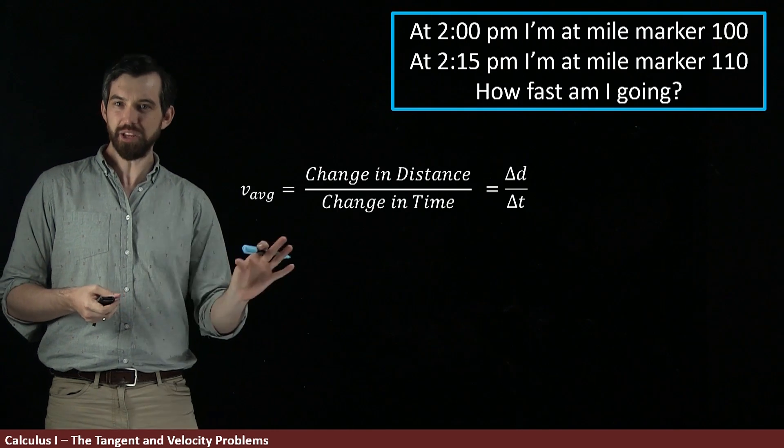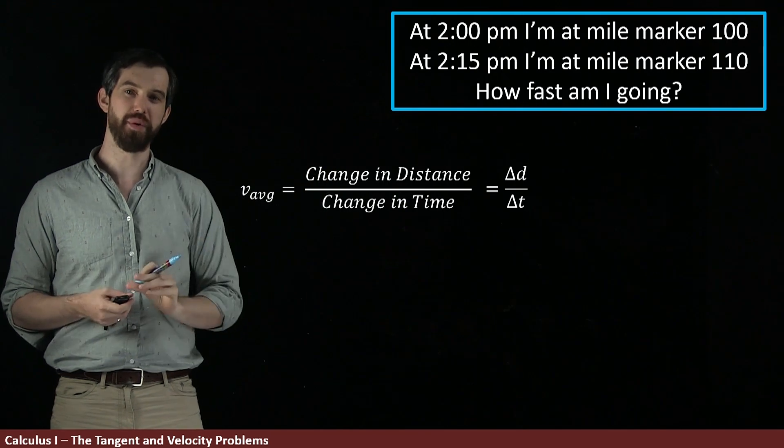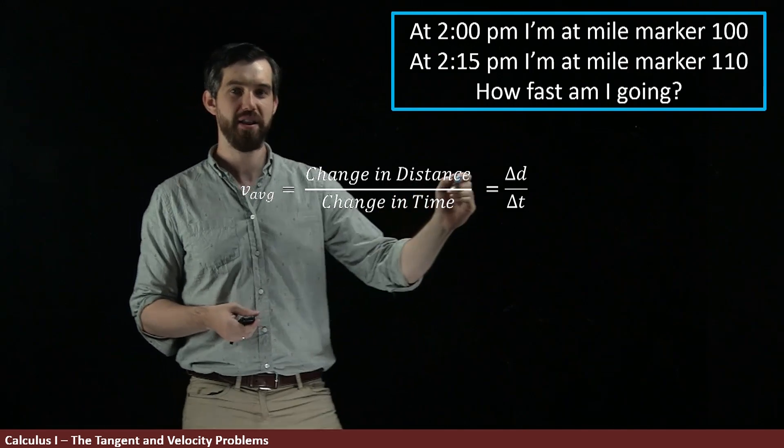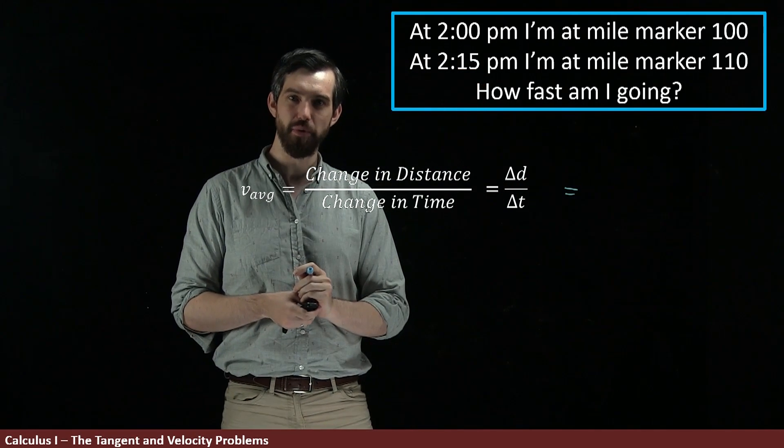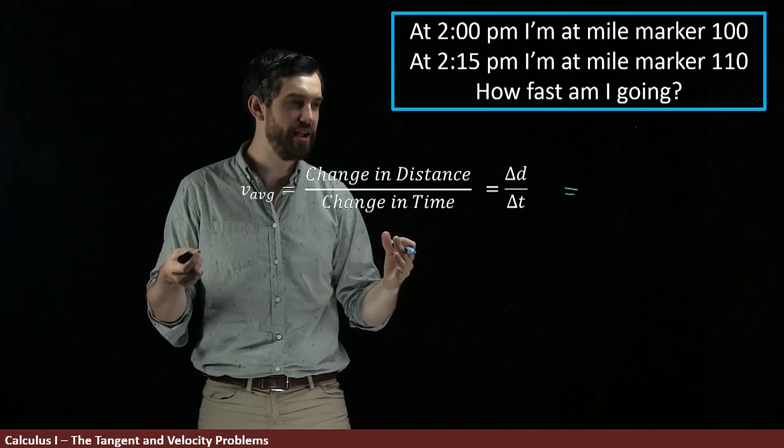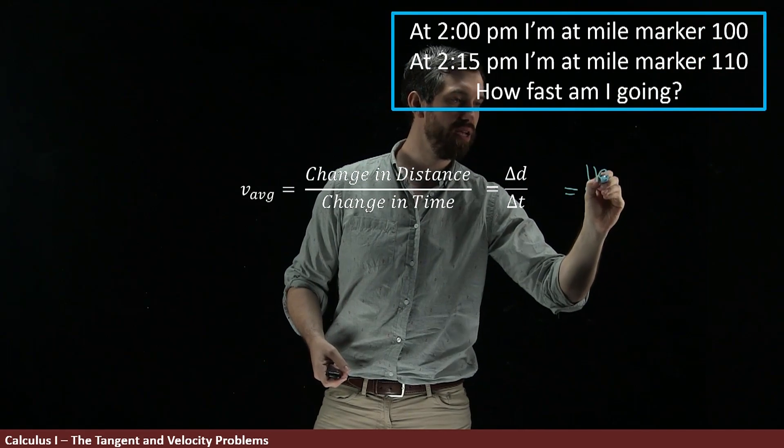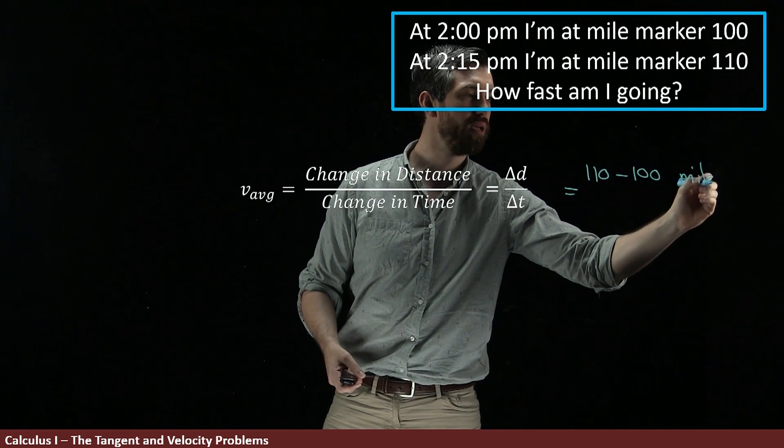So let's compute this average velocity over this 15 minute time interval that we have. So if I'm going to come down and try to figure out what the delta d is going to be, we went from the 100 to the 110 miles. So it was 110 minus 100 and the units here are going to be miles.